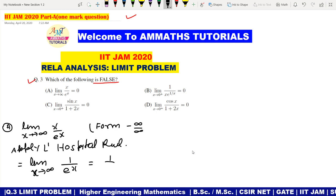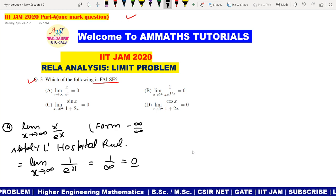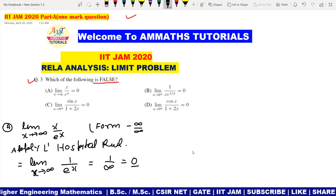Now apply limit. 1 by infinity, so it will be 0. So it will be 0, so here we have 0. So this is true. We need false.